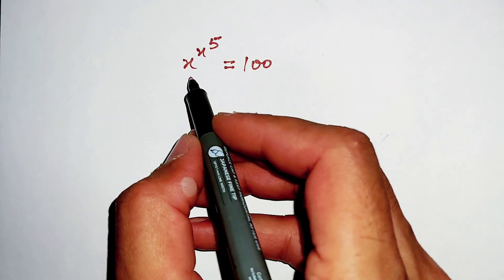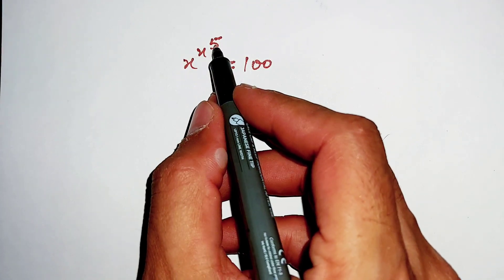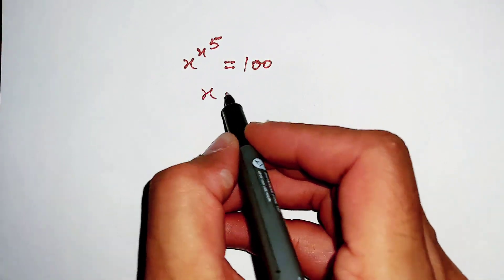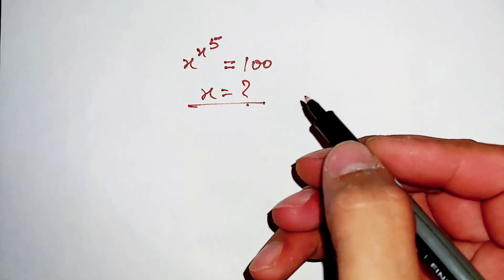Hello Dostom. The question is x^(x^5) = 100 and we have to find the value of x. Let's find out.